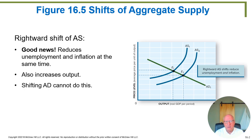The aggregate demand curve shifting can't do this. As we saw earlier with the stagflation argument, you can't simultaneously get an increase in output and a reduction in inflation by shifting the aggregate demand curve. So if you have the ability to change the aggregate supply curve, this could be a very good thing.